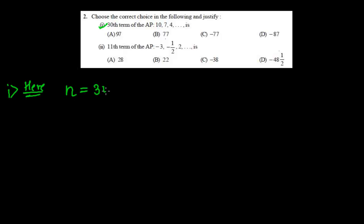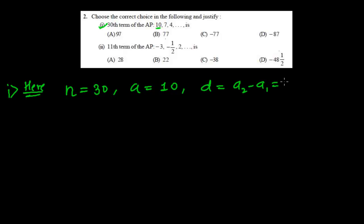We have to find the 30th term, so n is equals to 30. The first term is a = 10. We have also got the common difference — you can just subtract the preceding term from any term. So a2 minus a1, that is 7 minus 10, that is negative 3. We have got the common difference, d = negative 3.